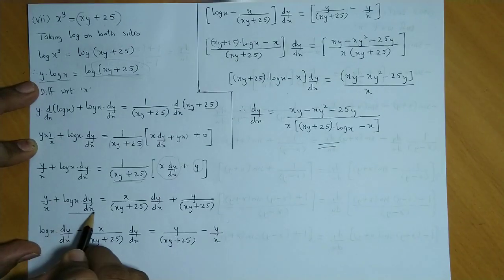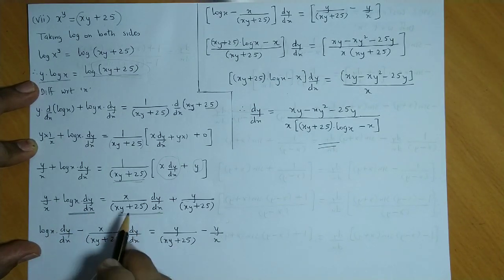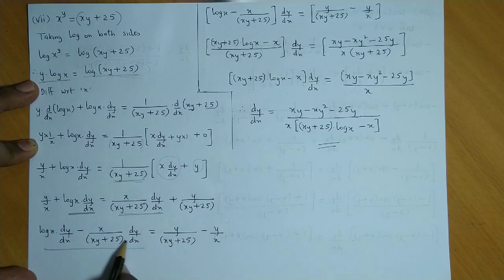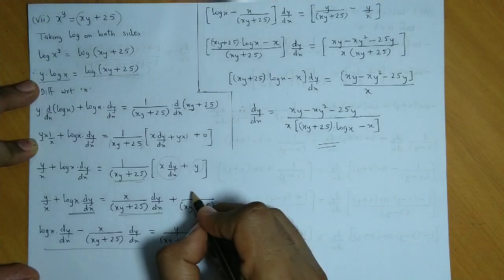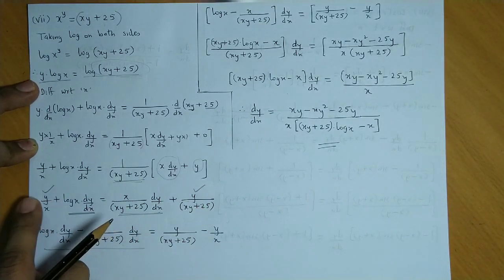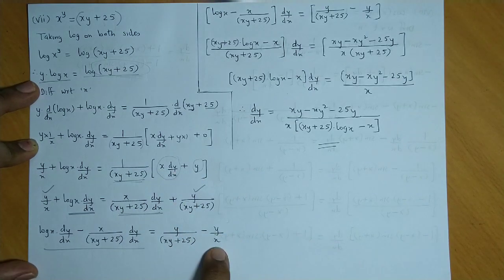Now in the next step, dy by dx we take to one side. See, these two are dy by dx terms. We've taken them to one side. dy by dx goes to the left, and these non-dy by dx terms, this term and this term, we collect on the right. Now taking dy by dx common.